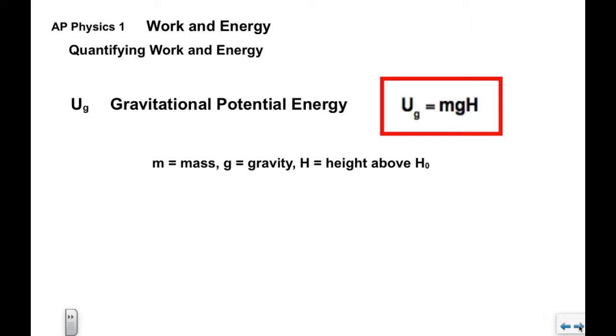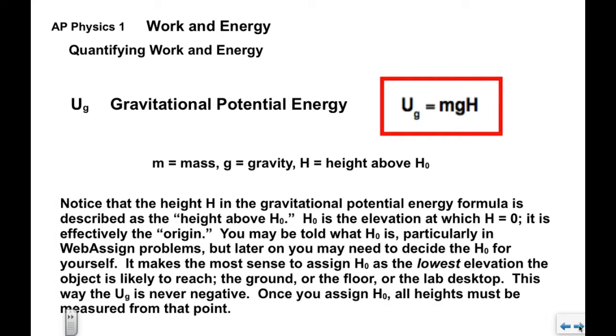Next we have gravitational potential energy, U sub G. The formula is m times g times h. This is the mass, g is the acceleration due to gravity, h is the height above what we're going to call H sub zero. H sub zero is the elevation at which h equals zero. It's effectively the vertical origin.